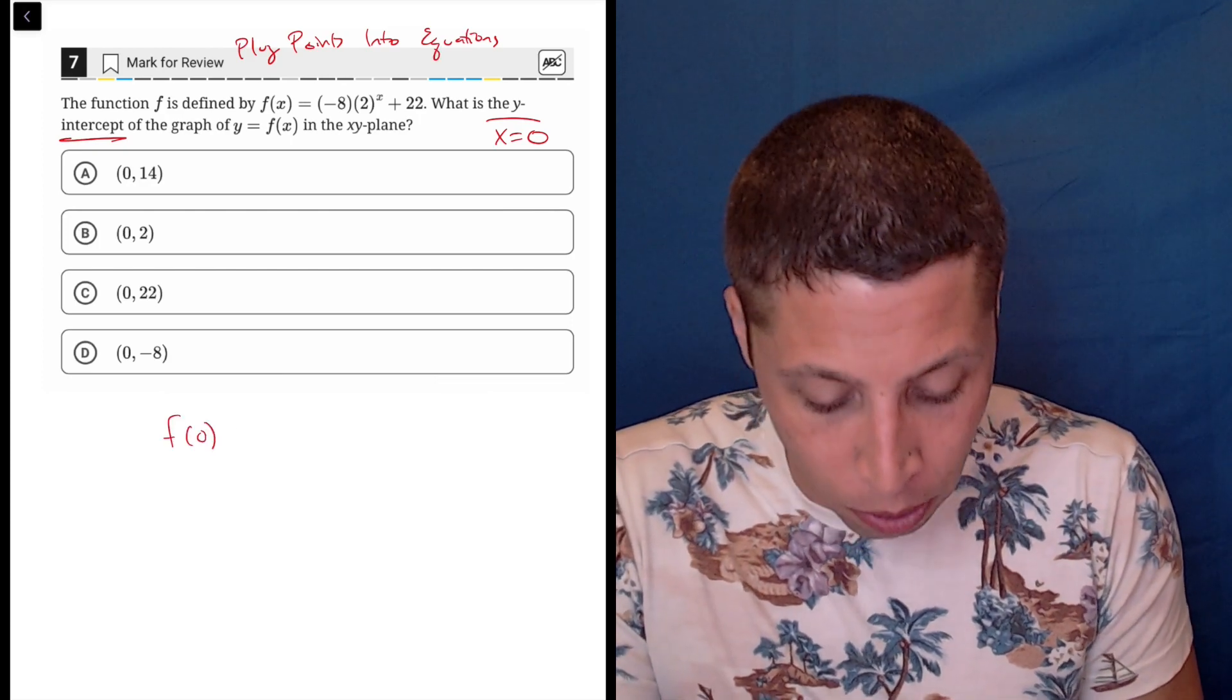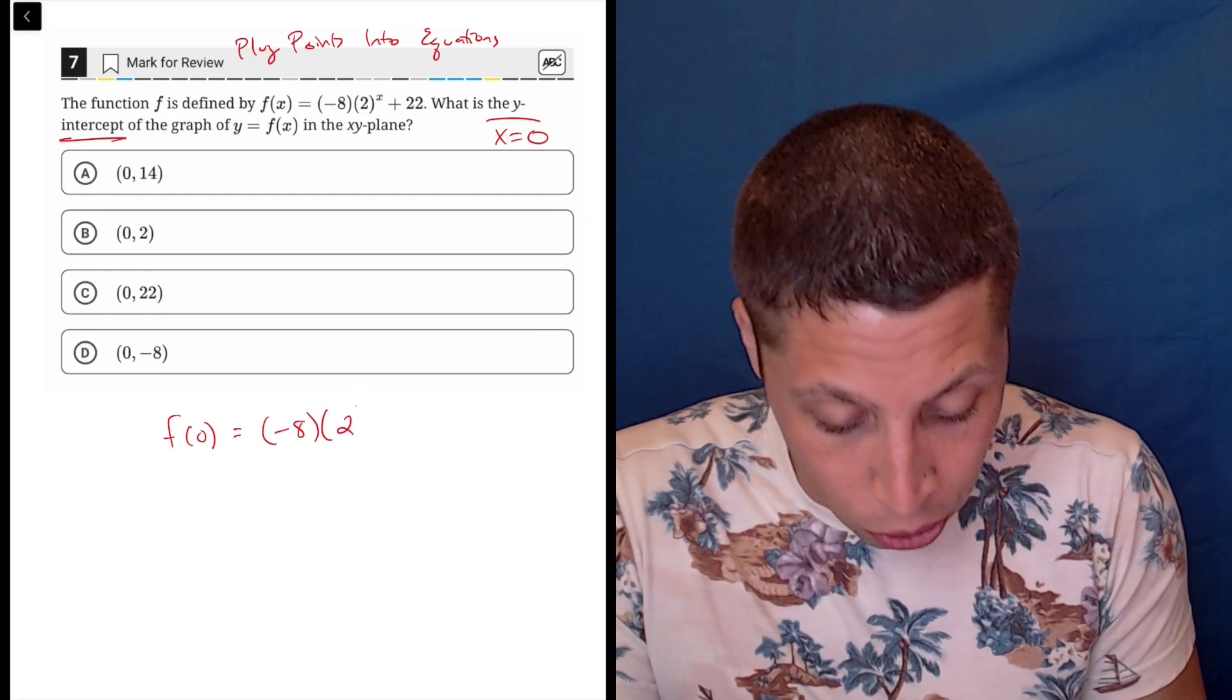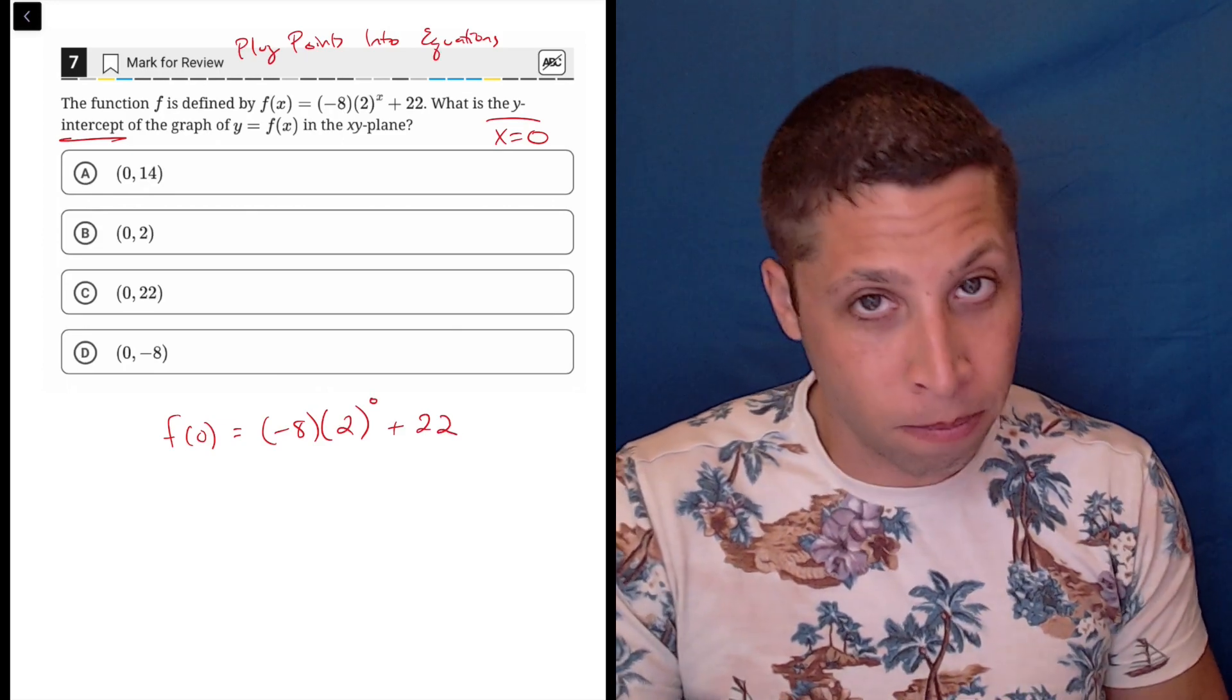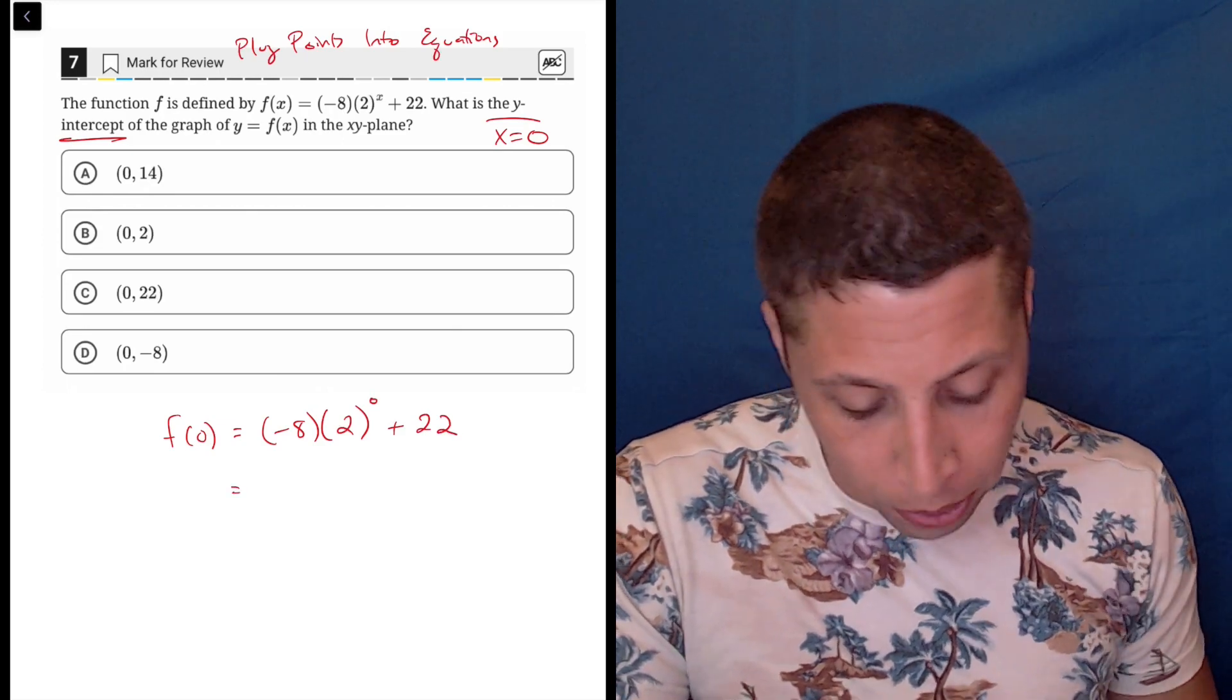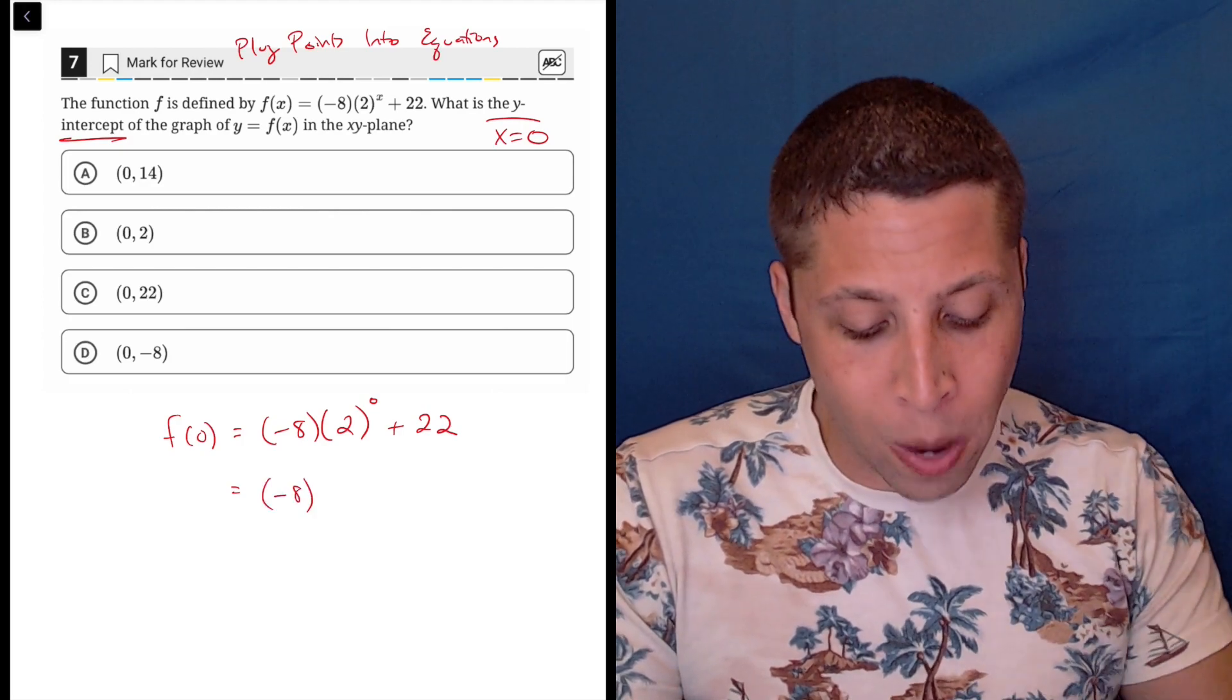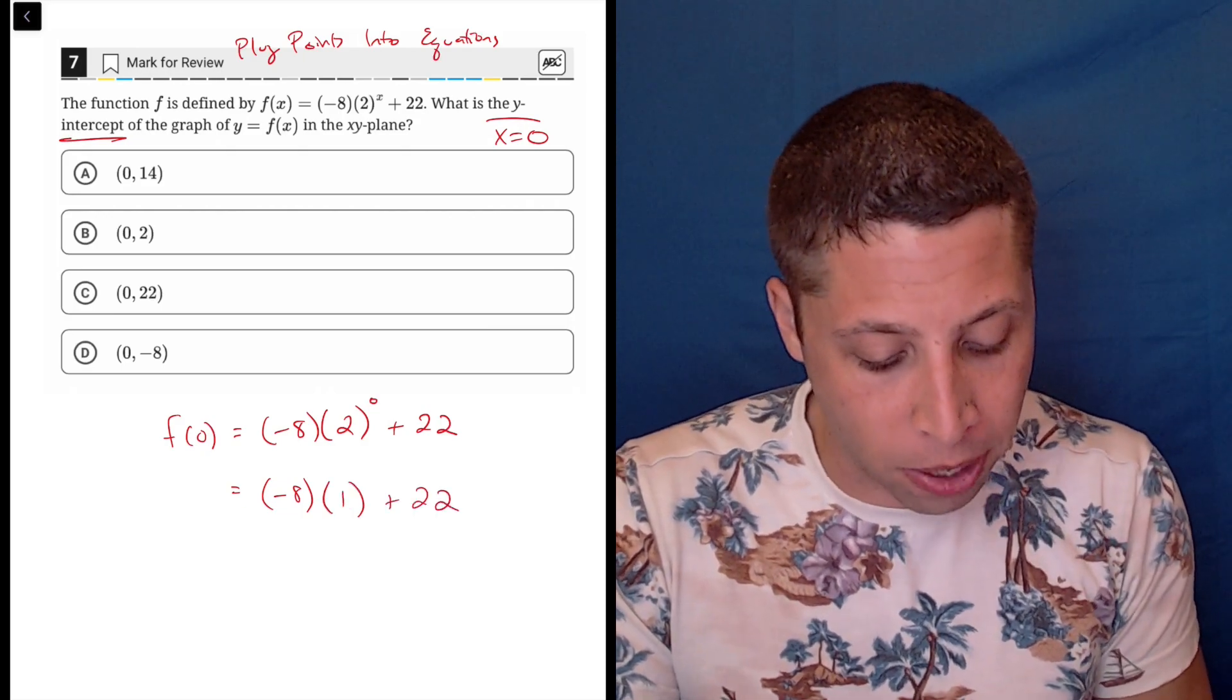So f(0) would be negative eight times two to the zero plus 22. Let's just do some normal PEMDAS, order of operations. Negative eight isn't going to change, but we do exponents first. Two to the zero is one - that's a fundamental property of math.